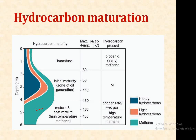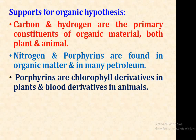Support for the organic hypothesis includes: carbon and hydrogen are the primary constituents of organic material from both plants and animals; nitrogen and porphyrins are found in organic matter, water, and many petroleum samples; and porphyrins are chlorophyll derivatives in plants and blood derivatives in animals. These are the key supports for the organic hypothesis of petroleum origin, which is the most accepted hypothesis for the generation of hydrocarbons.